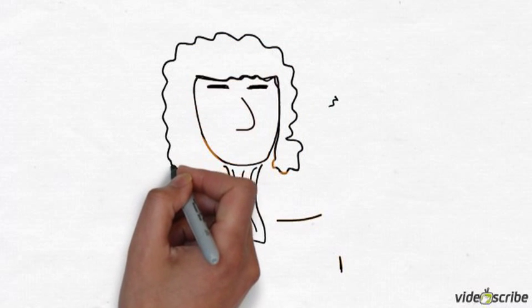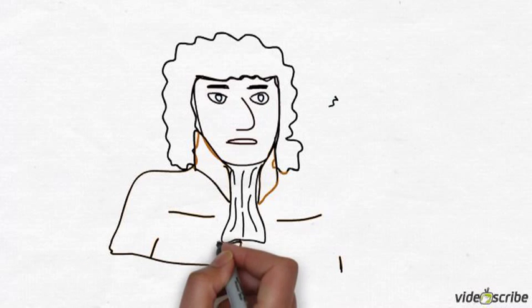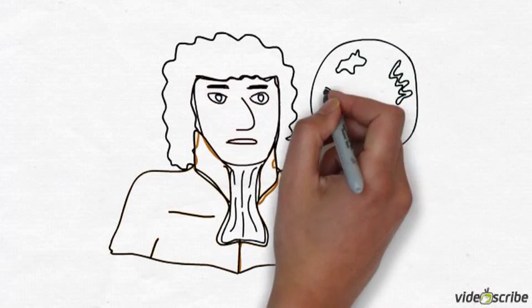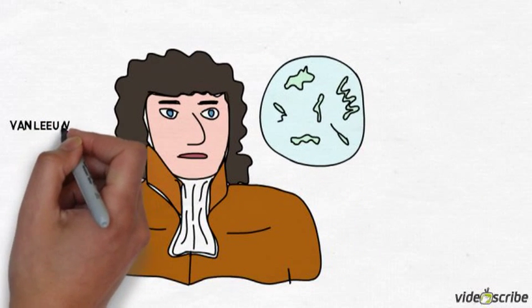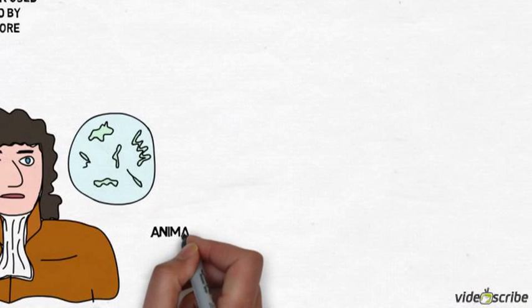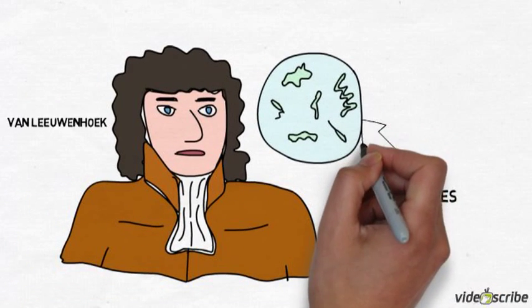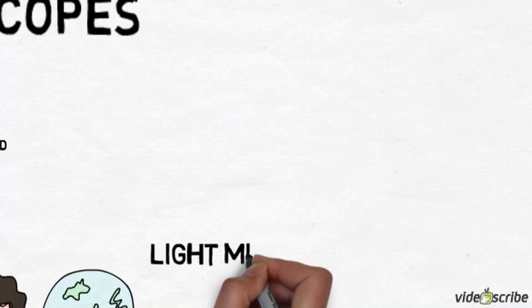People like van Leeuwenhoek and Hooke looked at the environment and saw things we hadn't seen before, like the cells in cork for the case of Hooke, or animalcules or small animals, amoebas and the like in pond water that van Leeuwenhoek saw. Up until then people didn't know about cells.